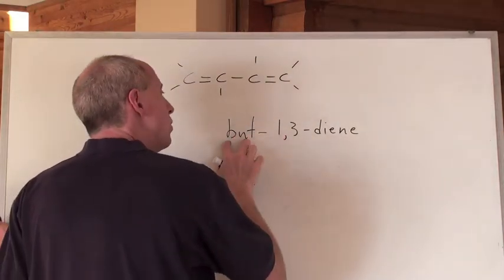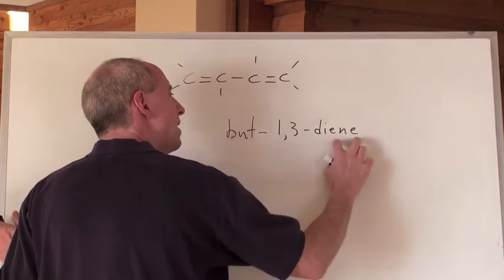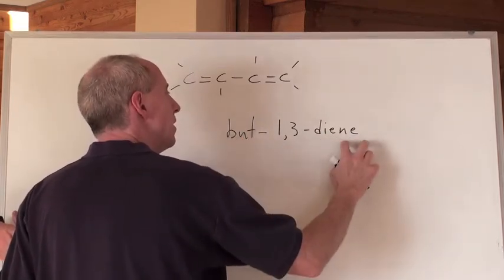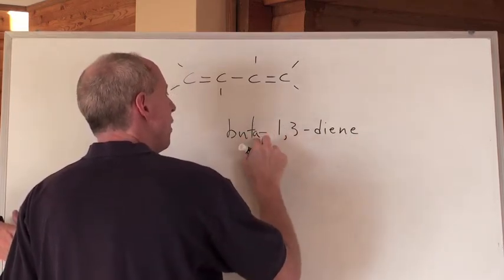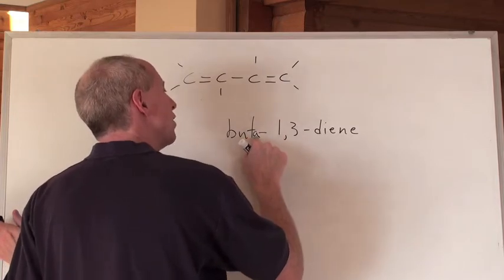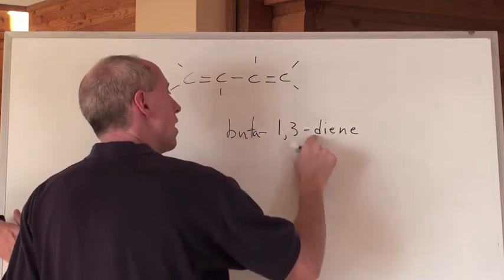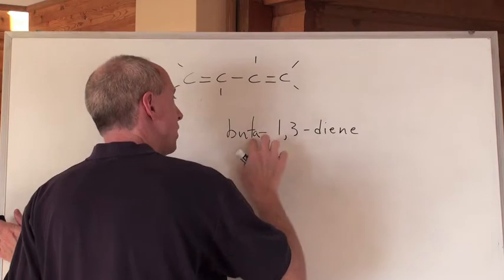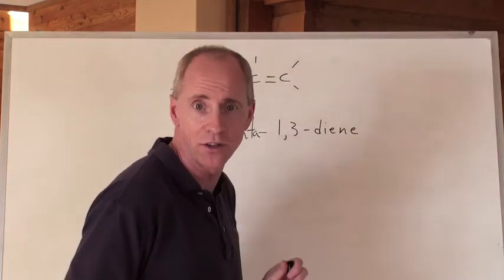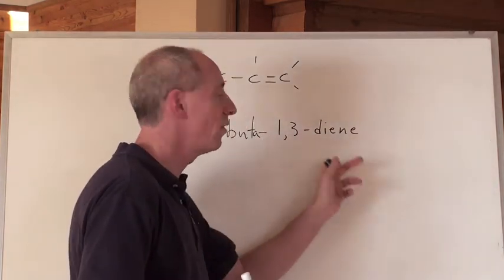Now, if you put, see, you would never say butte, you would say butteen, but you would never say butte diene. So, you put an a there, because now that actually runs with, a vowel runs with that consonant, and there's not two consonants butting into each other, and you could say buta one, three, diene.